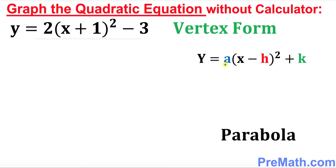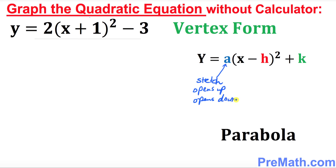Let me give you a brief intro. 'a' is simply going to tell you how big the stretch is, how big the parabola or the graph is going to look like. It can also tell you whether it opens up or opens down. When it says stretch, it means how skinny or how fat the graph is going to be.